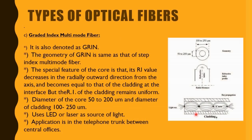The third type is graded index multimode fiber, also denoted as GRIN. Its geometry — diameter and dimensions — is the same as step index multimode. The special feature is that the refractive index decreases in the radially outward direction from the axis and becomes equal to the cladding refractive index, while the cladding remains uniform. Core diameter is 50 to 200 micrometers and cladding is 100 to 250 micrometers. The light source is LED or laser, and it is used in telephone trunk lines between central offices.